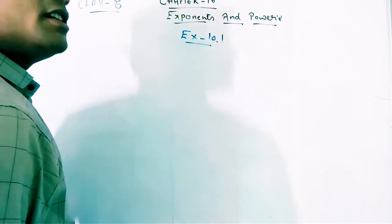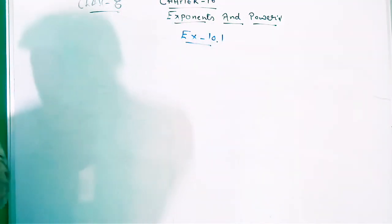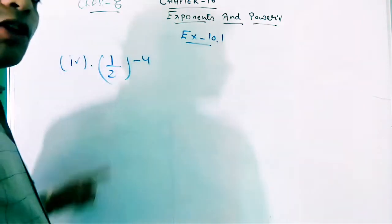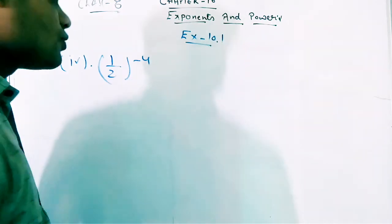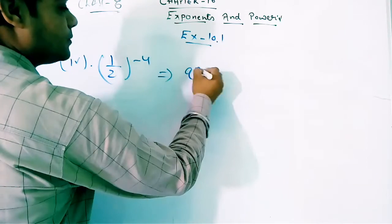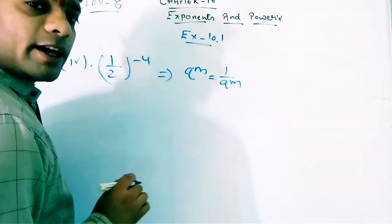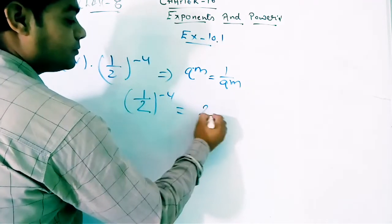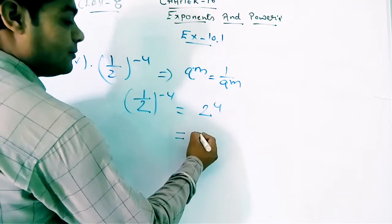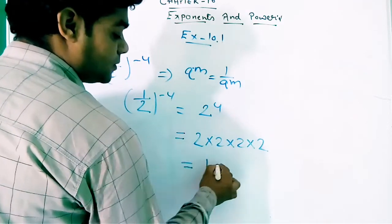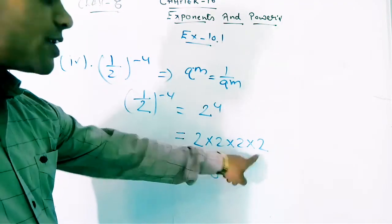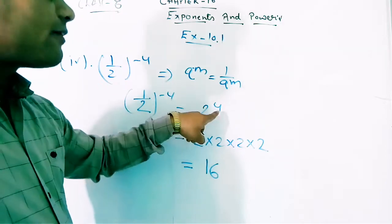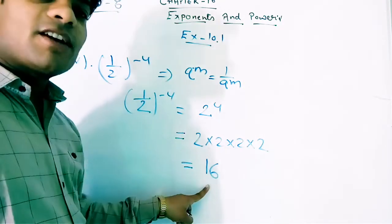Now the fourth part: 1 upon 2 raised to the power minus 4. Again the power is minus 4, so we use the same law — a^(-m) gives the reciprocal. So 1 upon 2^(-4) becomes 2^4. Then 2 into 2 into 2 into 2, four times, gives 16. Your answer is 16.